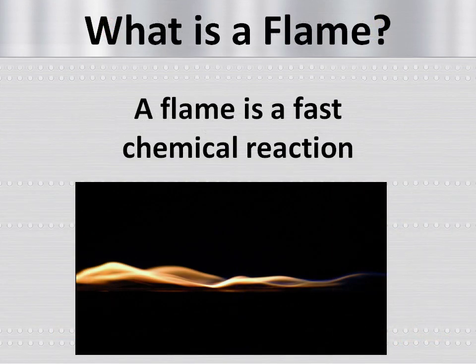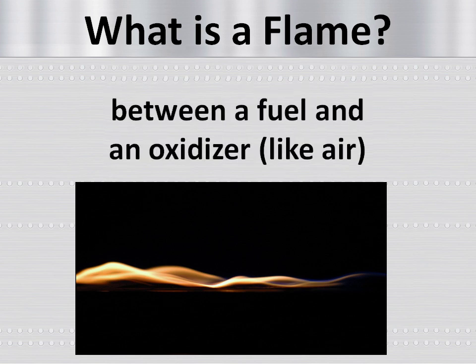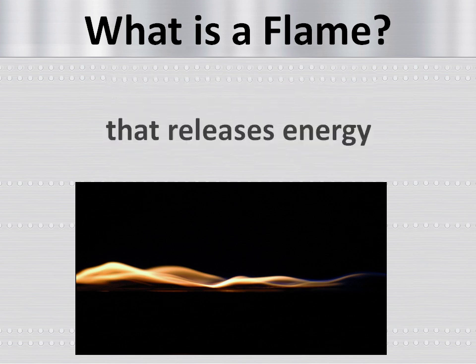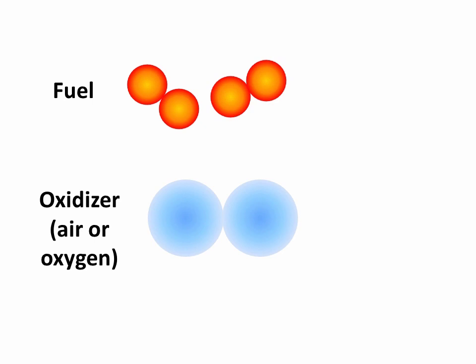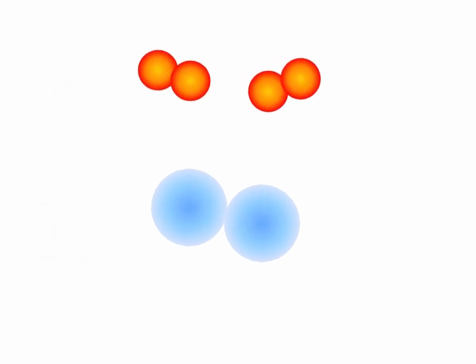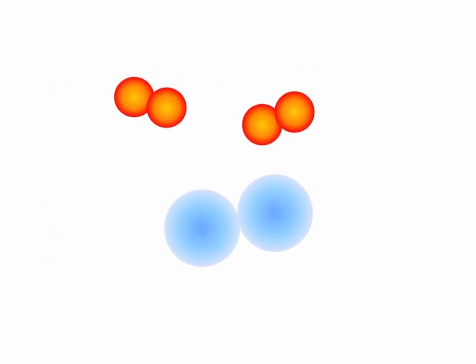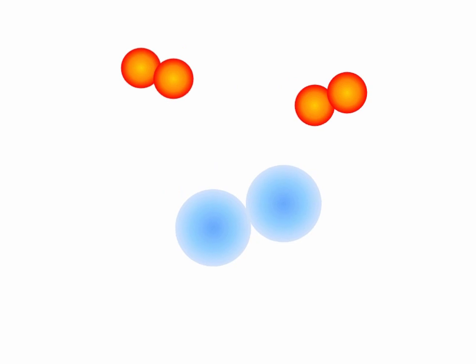A flame is a fast chemical reaction between a fuel and an oxidizer like air that releases energy. To produce a flame, you need a fuel like wood or gasoline and an oxidizer such as air or oxygen. If they mix in just the right way and it is hot enough, you get a flame.